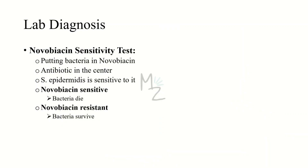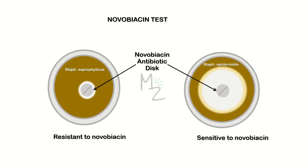The novobiocin sensitivity test: novobiocin is an antibiotic. We place it in the center of a petri dish filled with the bacterium to check sensitivity. Staph epidermidis is sensitive to novobiocin — meaning the bacterium dies in its presence. When staph epidermidis is placed in the petri dish, the bacterium dies, confirming it is novobiocin sensitive. On the other hand, staph saprophyticus survives and is therefore resistant to novobiocin.